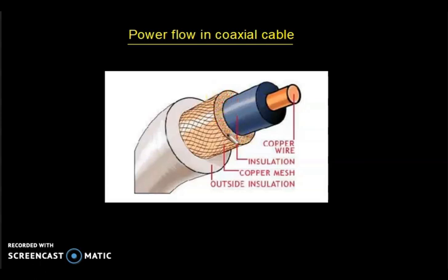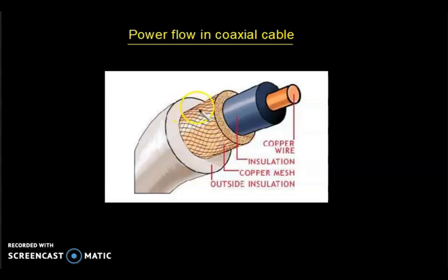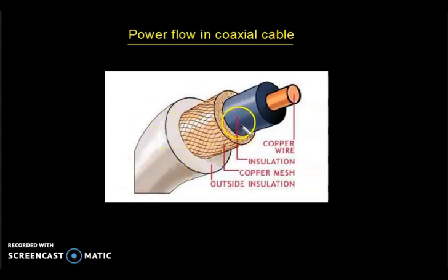These types of materials are used for communication purposes because electromagnetic interference can be minimized using coaxial cables. On the outer side we can see a protective jacket. So these all describe the inner anatomy of a coaxial cable.